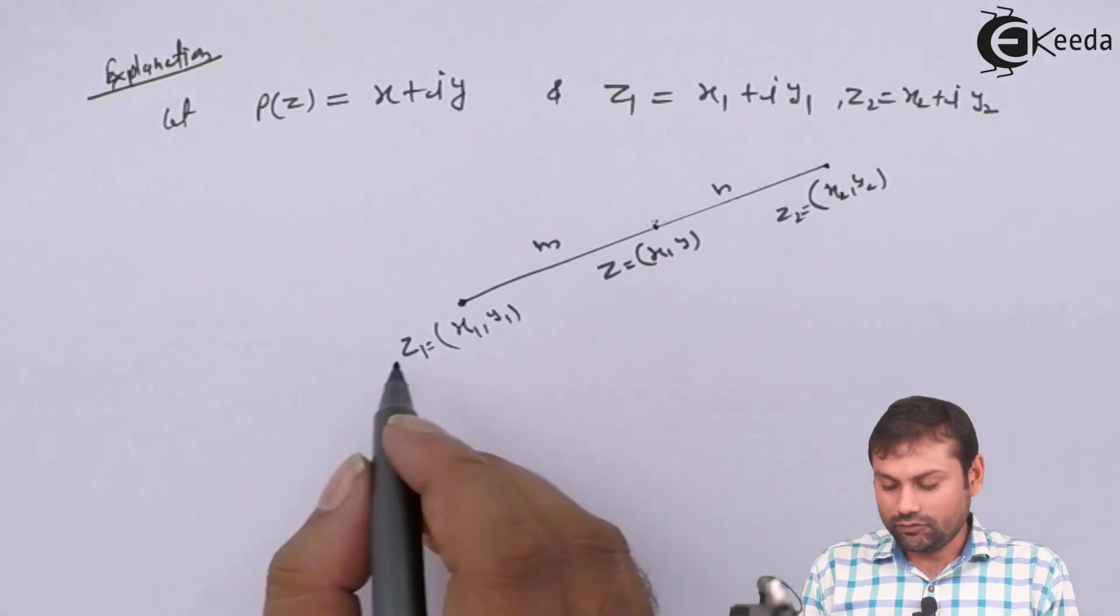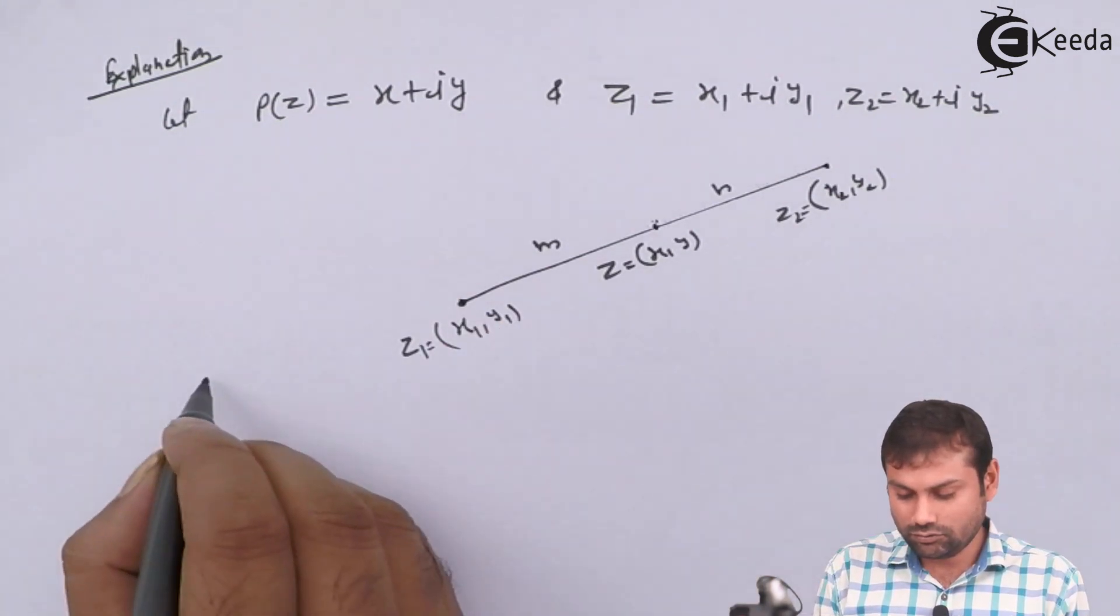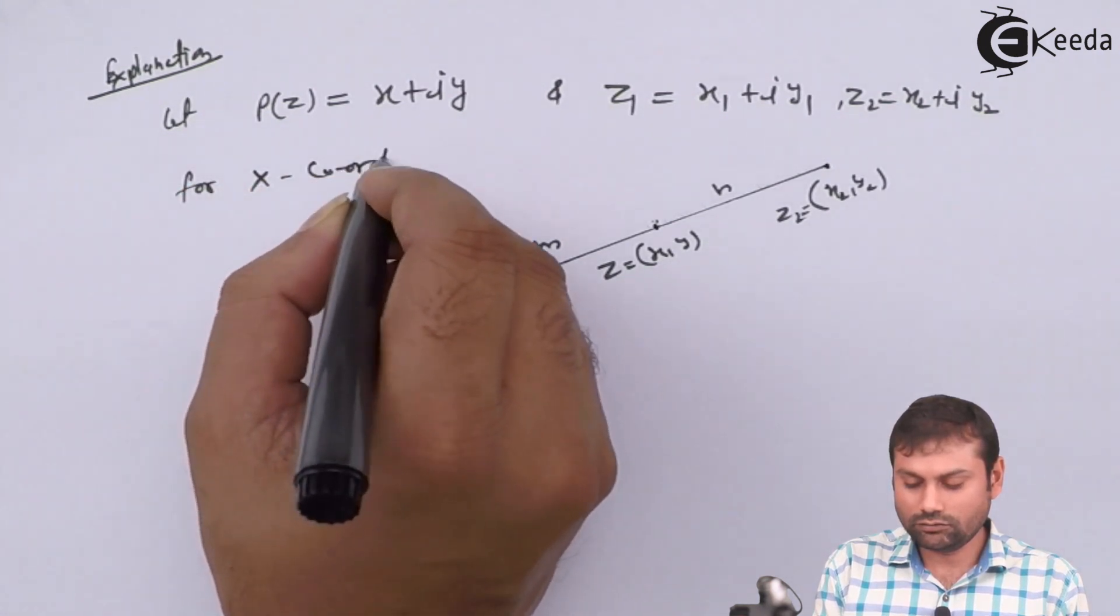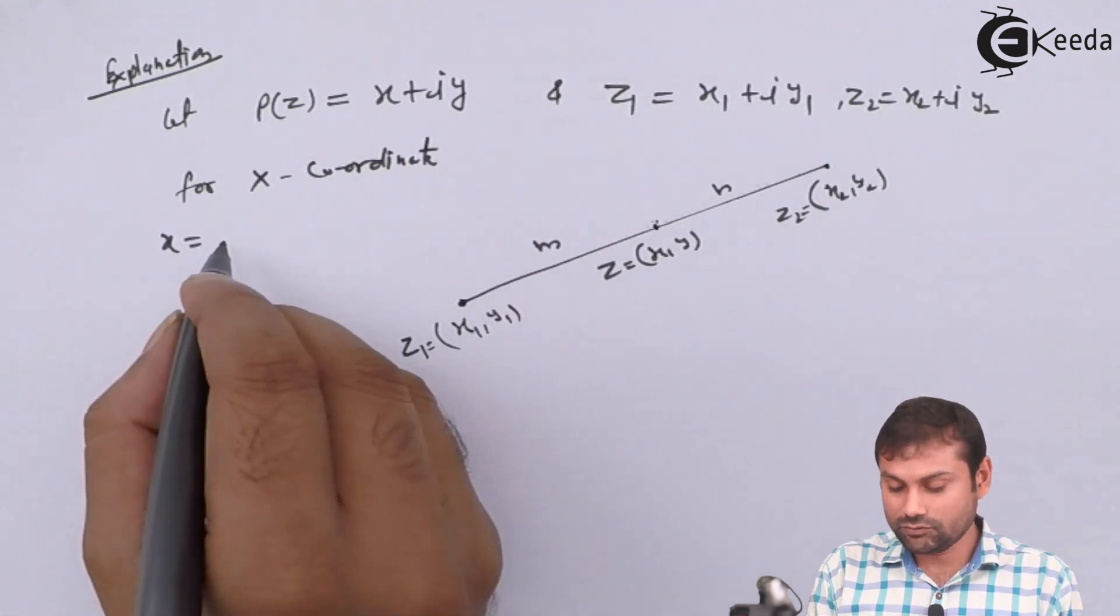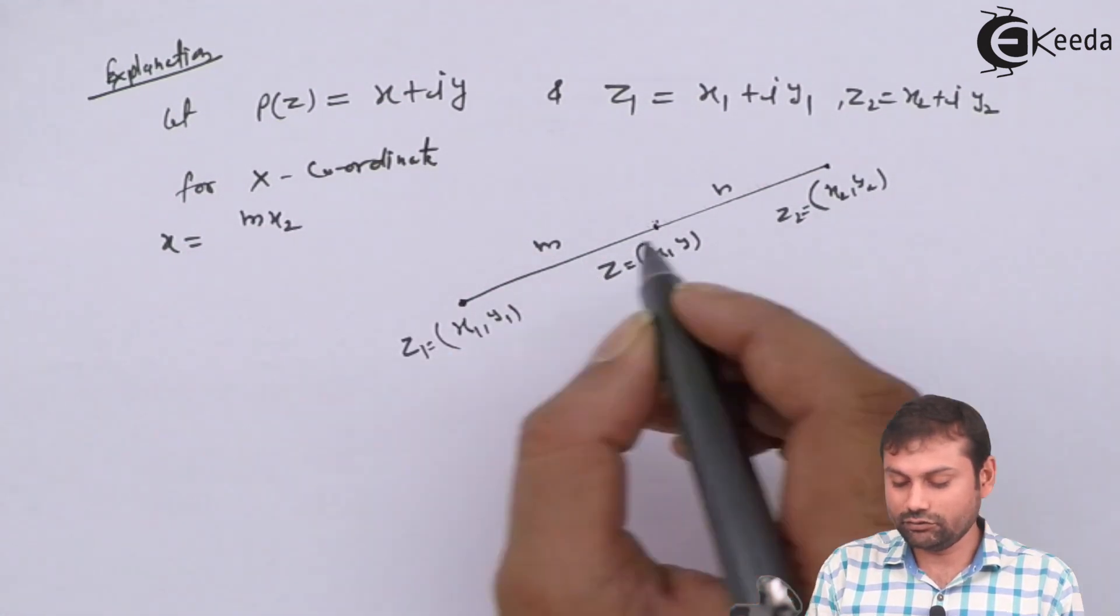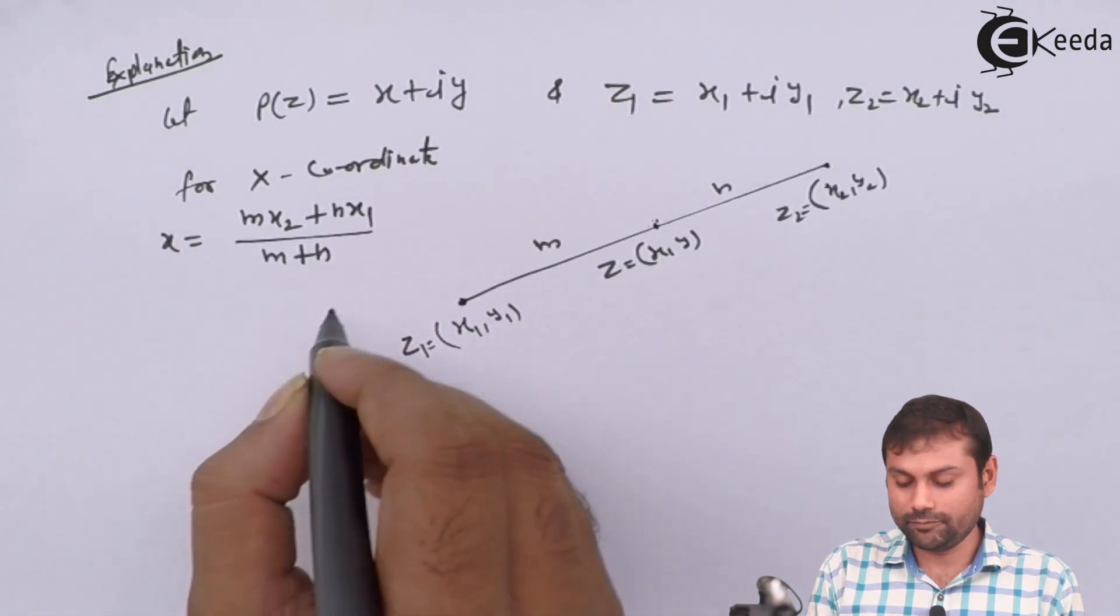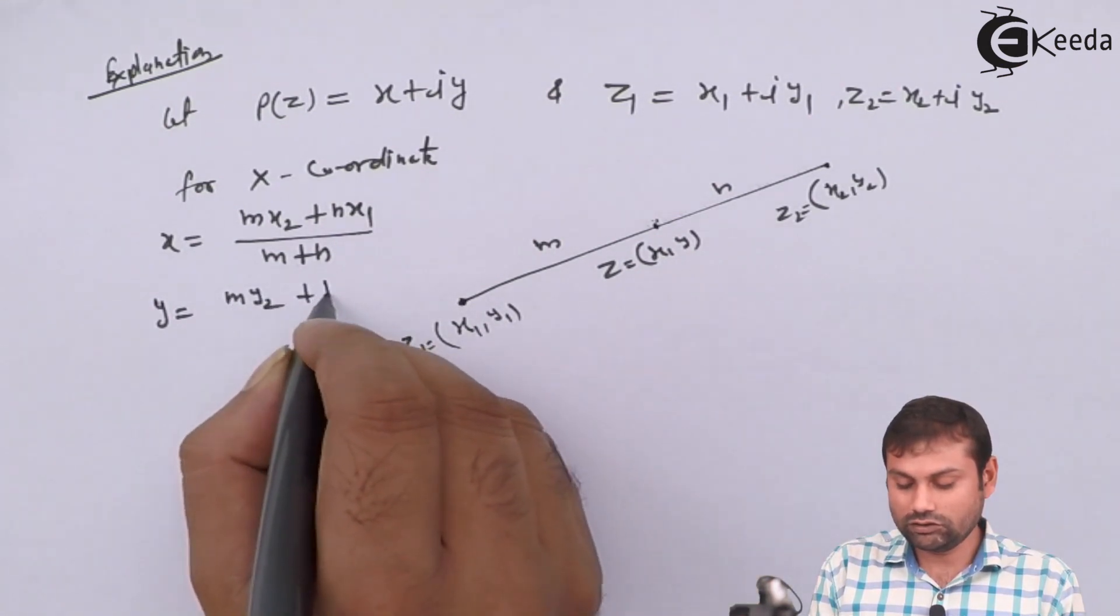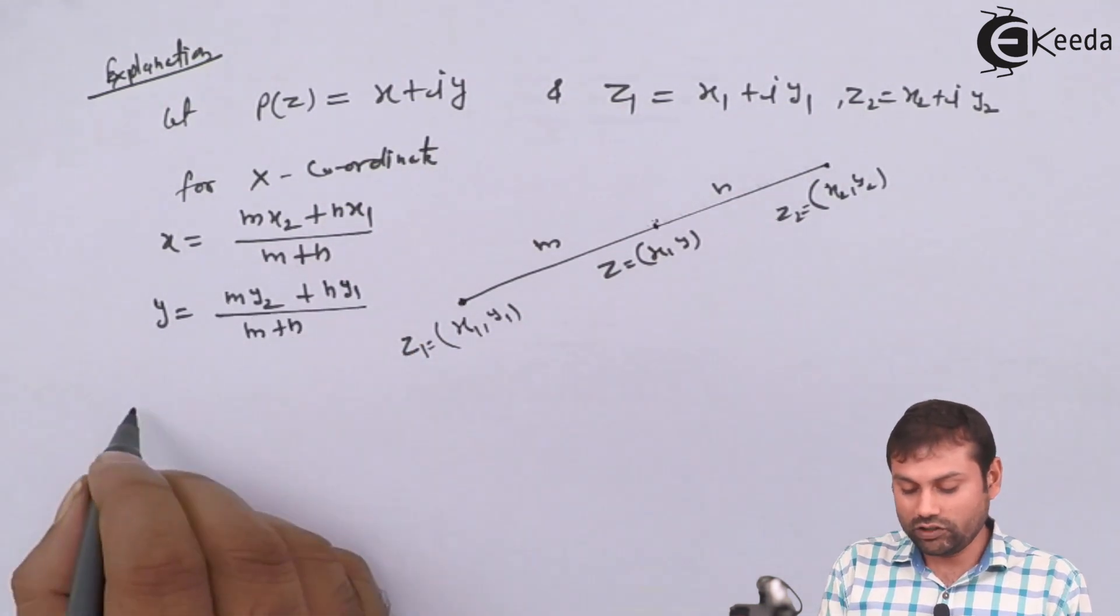So what was the formula? For X coordinate, X will be M X2 plus N X1 upon M plus N. Similarly for Y, M Y2 plus N Y1 upon M plus N. Now what is z?